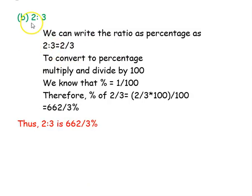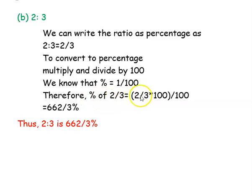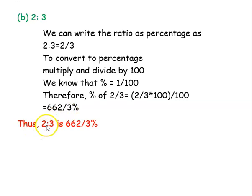The next number given is 2 is to 3. We can write this as the fraction 2 divided by 3. To convert this into percentage, we multiply and divide by 100. Since 1 percentage equals 1 divided by 100, we write the percentage of 2 divided by 3 as 2 divided by 3 into 100, divided by 100. The divided by 100 becomes the percentage symbol, and 2 into 100 divided by 3 gives 62 and 2 divided by 3. Thus, 2 is to 3 is 62⅔ percentage.